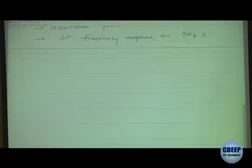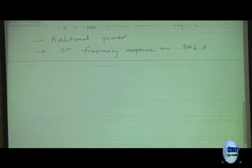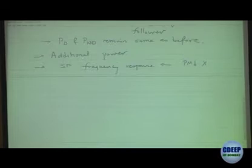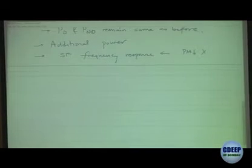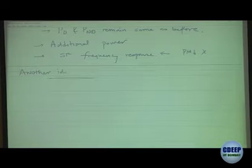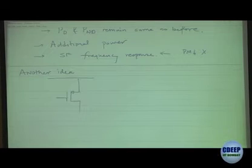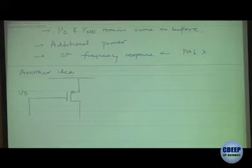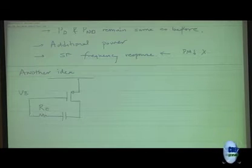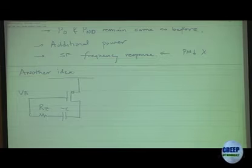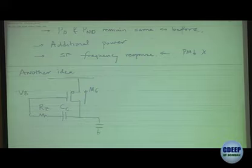That was one trick someone started with, and then people worked on it further to find a different way. Here is another idea: instead of a capacitor alone, put a resistor Rz in series with the compensation capacitor CC, along with M6 and CL.